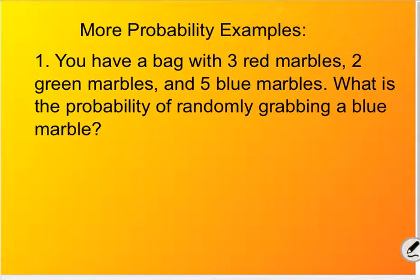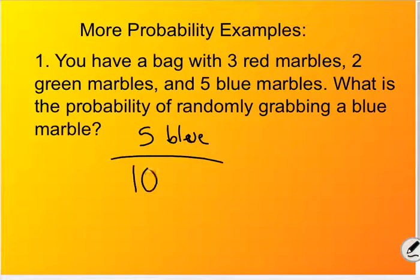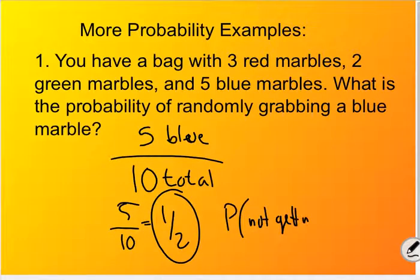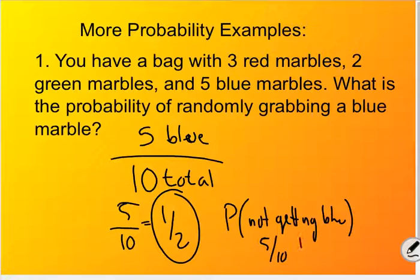Probability example: you have a bag with three red marbles, two green marbles, and five blue marbles. What's the probability of randomly grabbing a blue marble? There are five blue marbles out of ten total marbles, so the probability of blue is five out of ten, or one half. The complement would be: what's the probability of not getting a blue? Well, that would also be five out of ten, or one half.